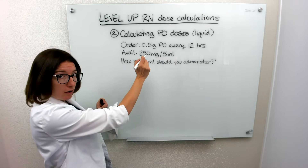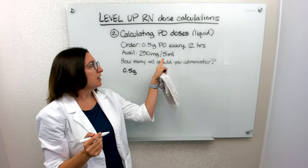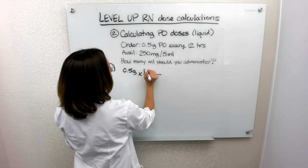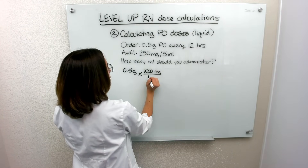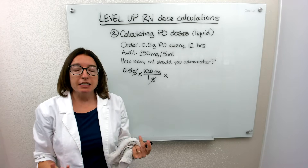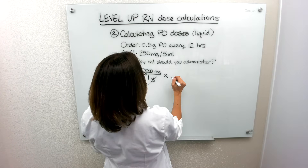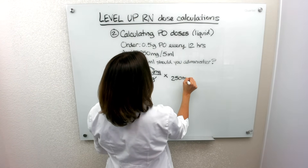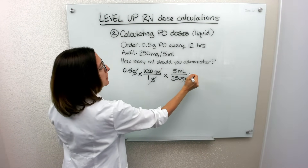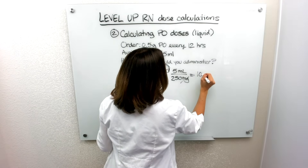Again, I'm going to start with what's ordered, which is 0.5 grams. You can see by what's available that I'm going to have to convert again to milligrams. So I'm going to multiply by 1,000 milligrams over 1 gram. Now I have milligrams, but I need to find out how many milliliters to give the patient. So I multiply this times 5 milliliters per 250 milligrams. I can cross off my milligrams, and when I multiply this out I will get milliliters — in this case, 10 milliliters.